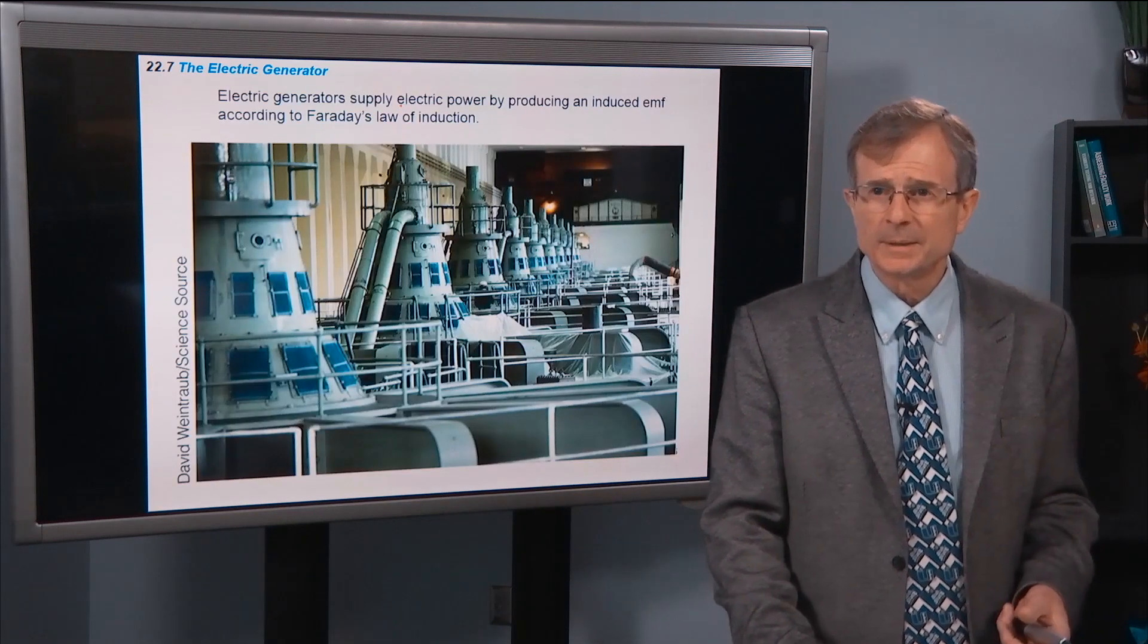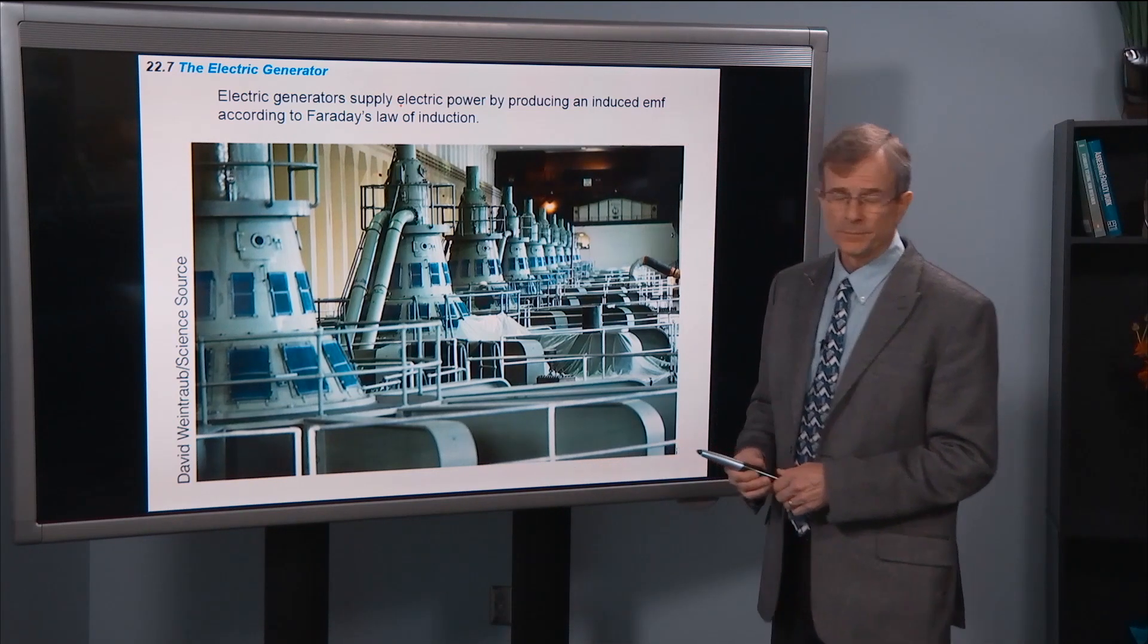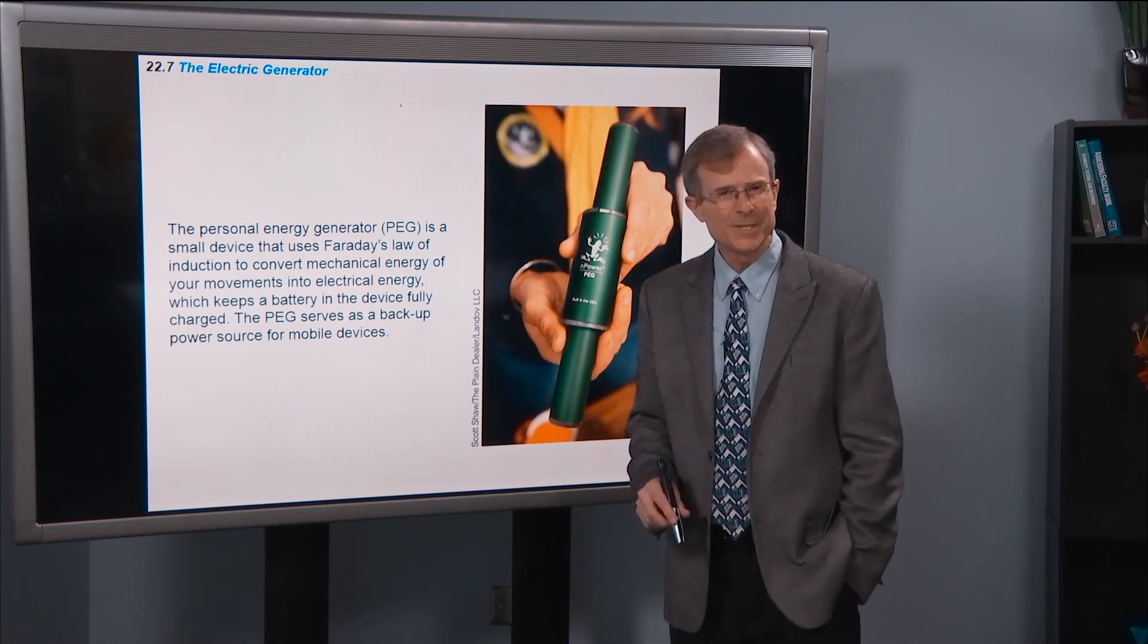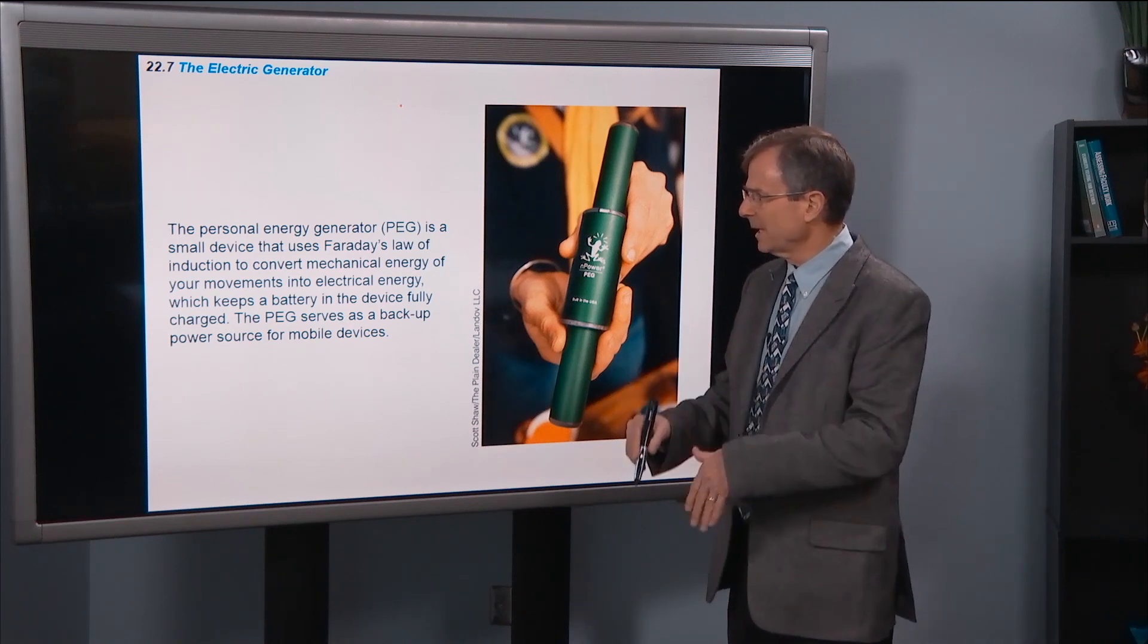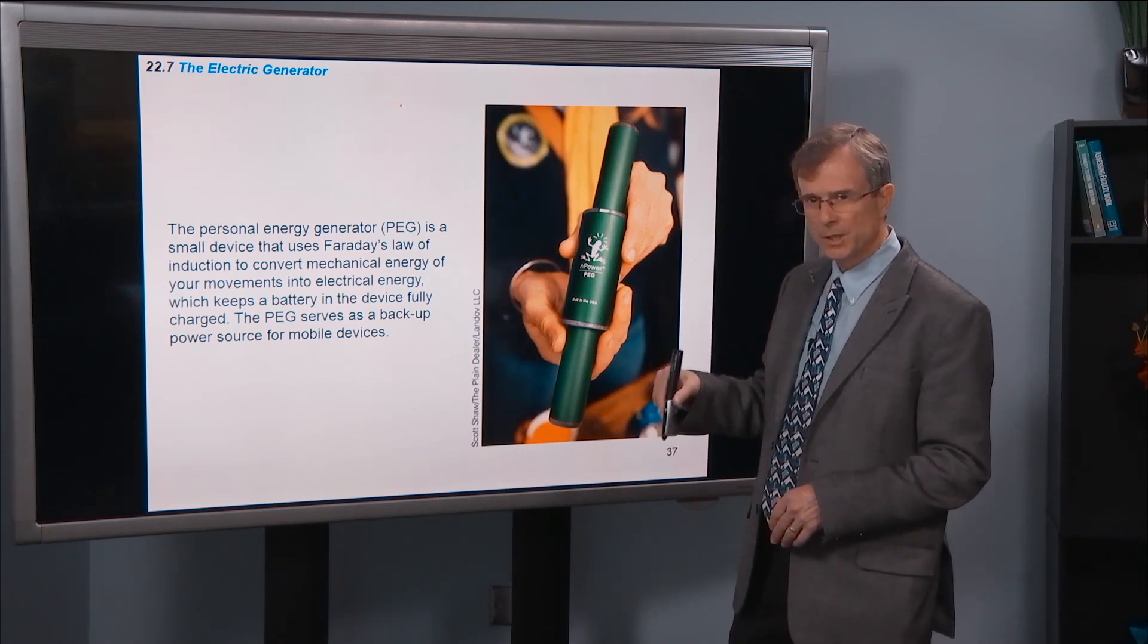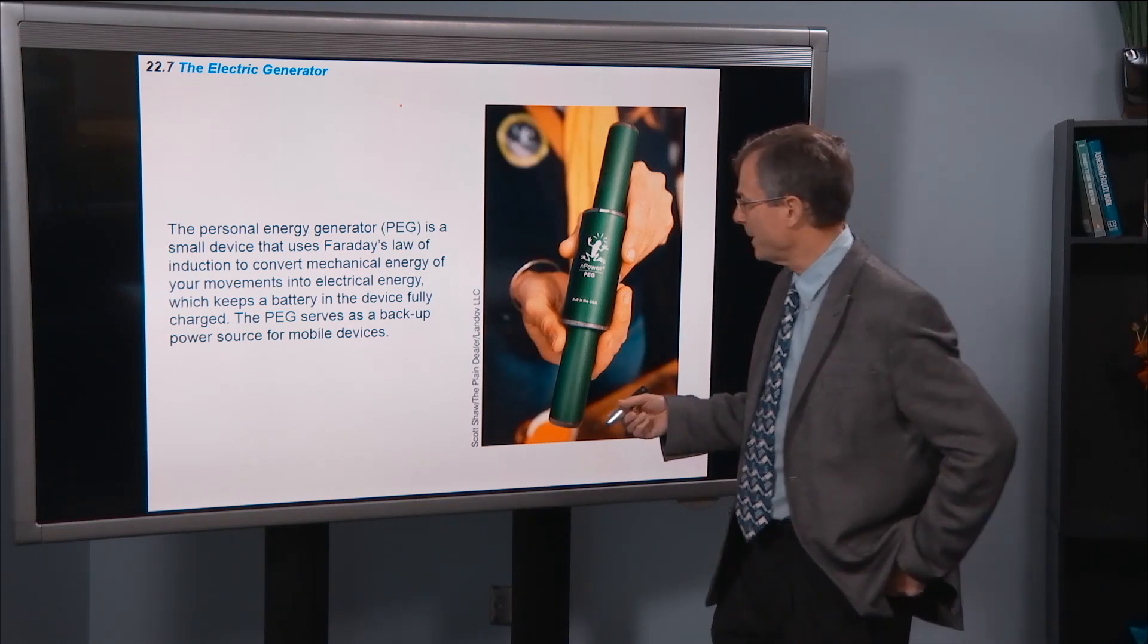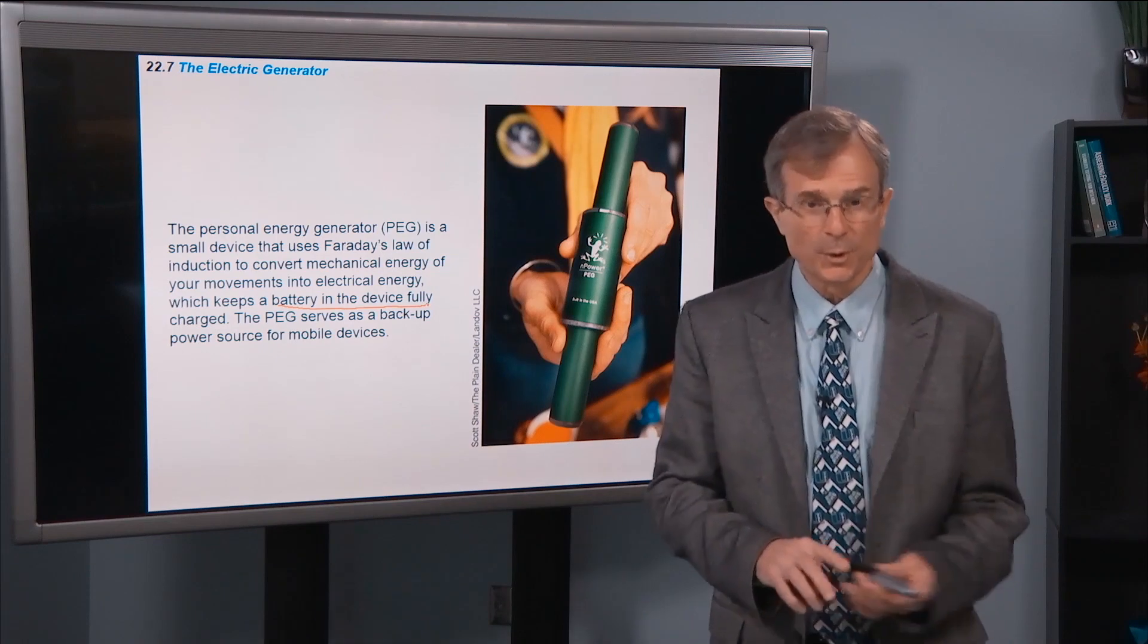And so this is the way that electric power is produced in power generating stations. Faraday's law of induction. It's also the principle behind a so-called PEG device, personal energy generator. It's a small device you can put in your backpack that uses Faraday's law of induction to convert the mechanical energy of your movements. You're moving along with your backpack on your back, or going up some stairs. This jiggling motion changes the flux through a loop of wire, which induces a current that charges a battery in this device. And then you can use this device as a power source for your other mobile devices.